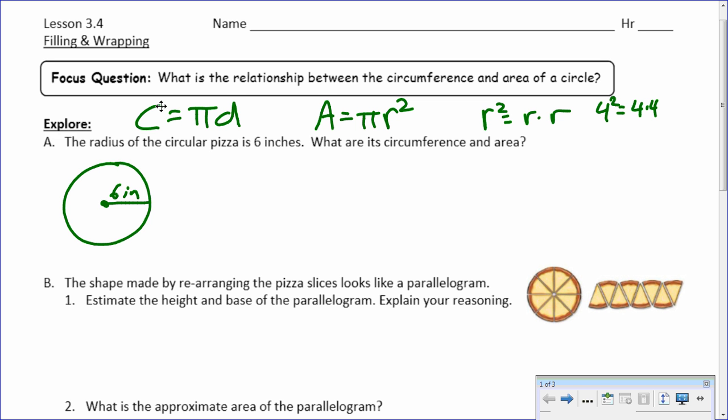So again, if we try to find the circumference, that's pi times the diameter. Well, we don't have the diameter here, so how can I find the diameter, Gracie? Yeah, the diameter is double the radius, right? So if our radius is 6, our diameter is 12. So we would have 12 times pi, and if we put 12 pi into our calculator, 37.7? If you round it, it's 70, right? 37.70 inches.